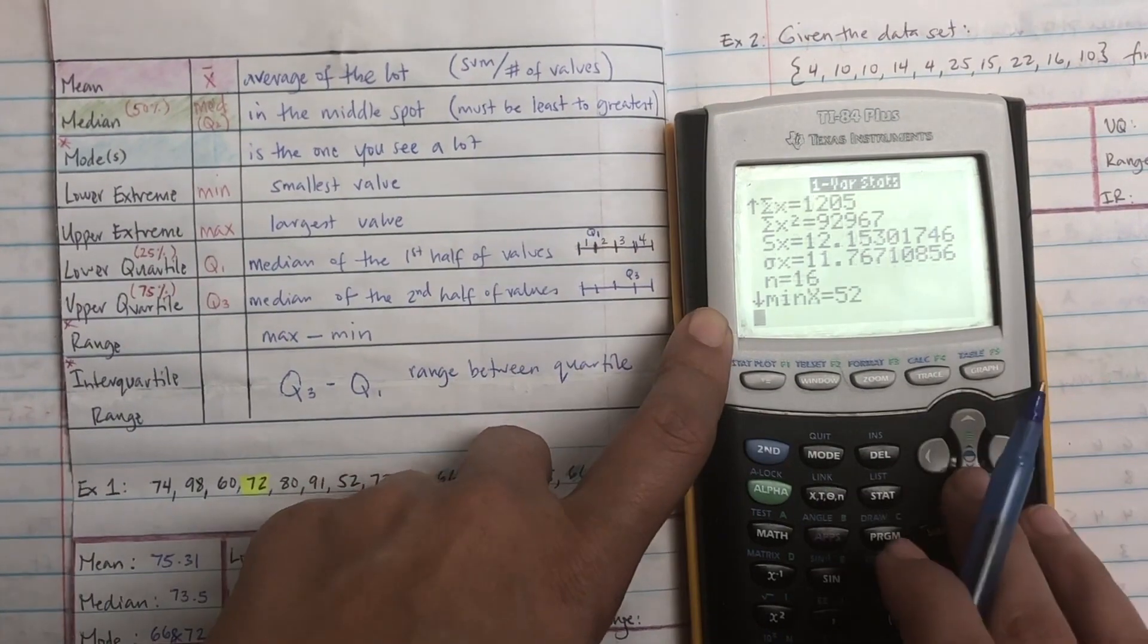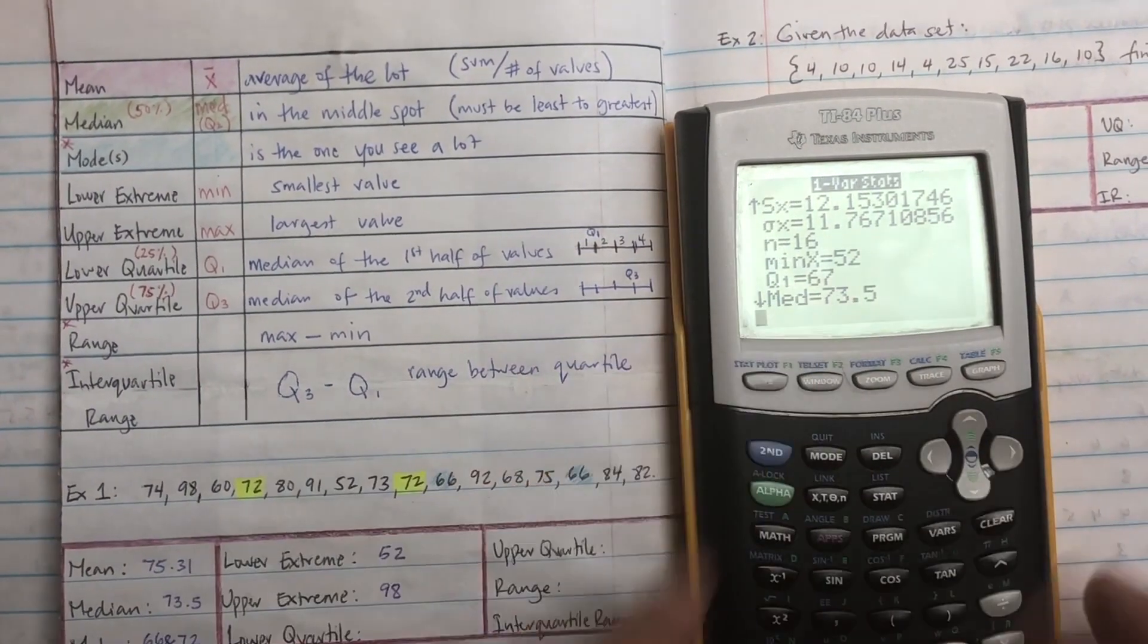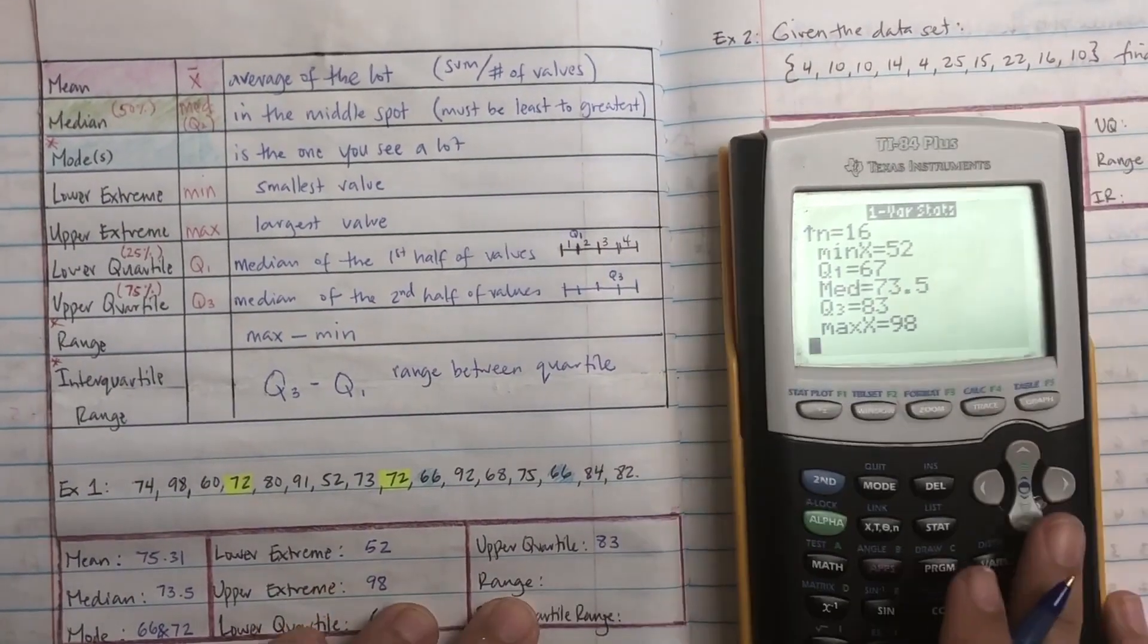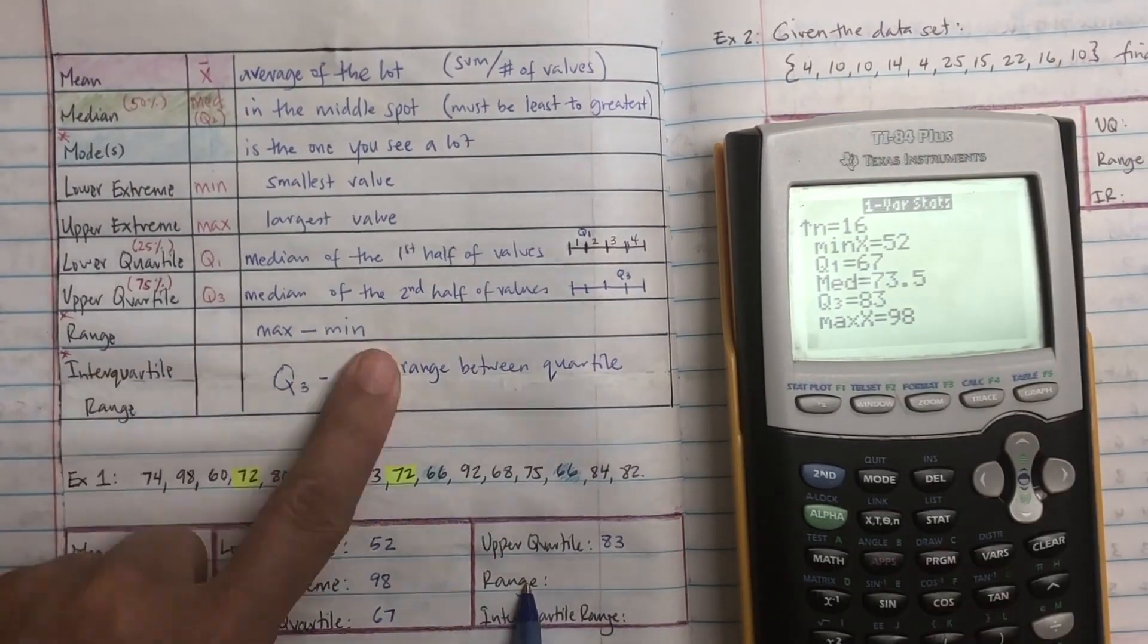I don't know why I was doing it like that. All right, Q1 is what I'm looking for, which should be the lower quartile. That's 67. Then I'm going to look for the upper quartile, will be Q3, which is 83.